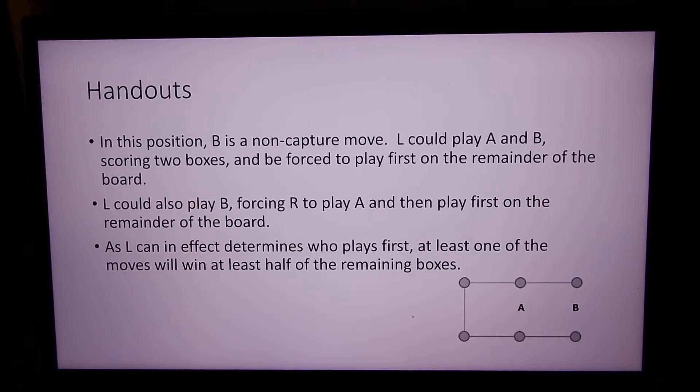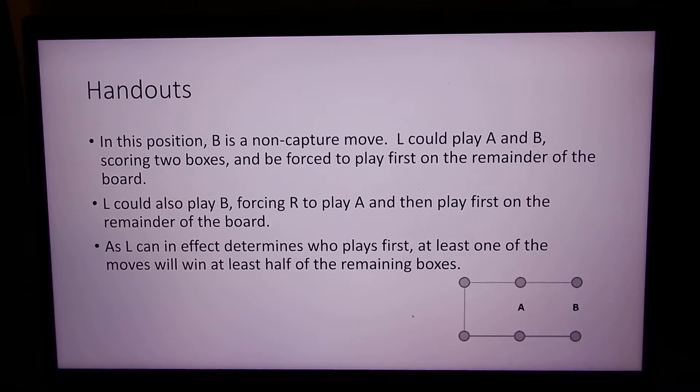So in the endgame, a common situation that happens is you have two boxes situated where B is a non-capture move. The next player to move, which we call left, could play either A or B, and if he plays A followed by B, scores two boxes, and is forced to play first on the remainder of the board.